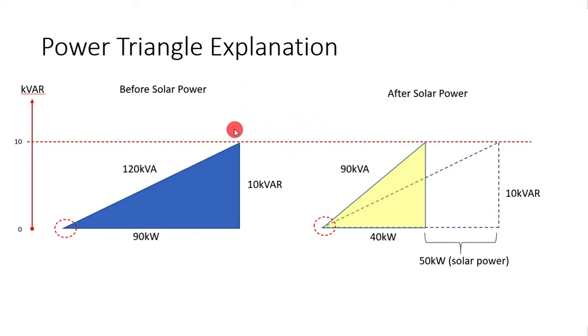So, after you install the solar system and you energize it, let's say the solar system capacity is 50kW. After solar power means when you turn on the solar power which supply in parallel with the utility power. So, you see this dotted line here, this power triangle,